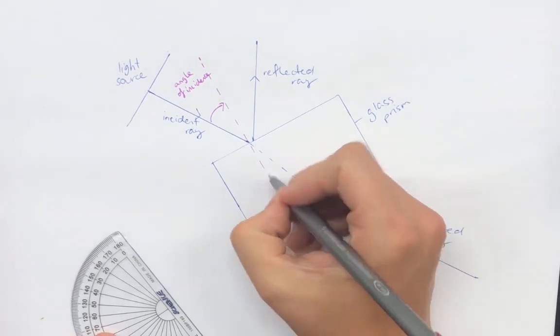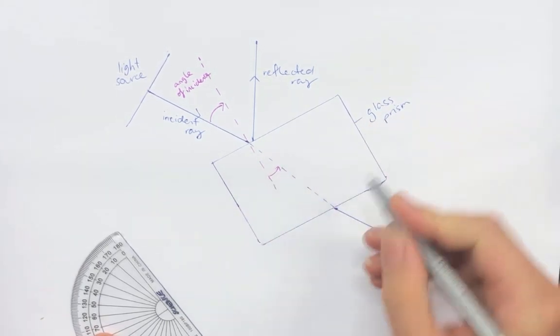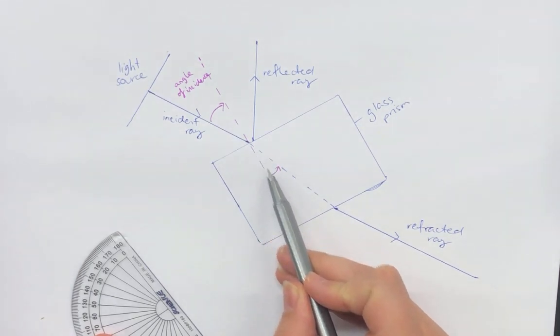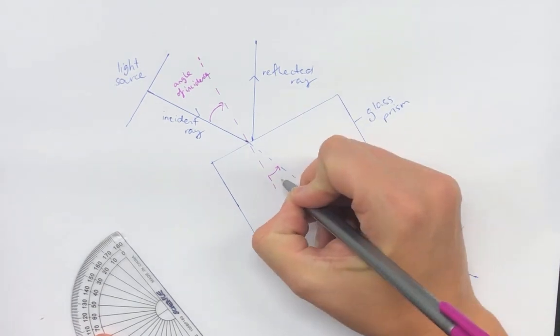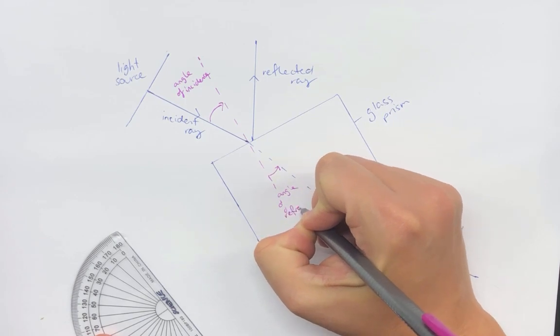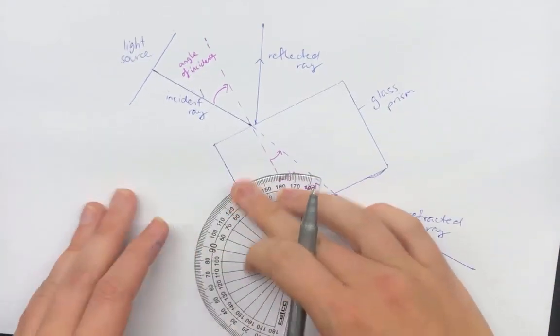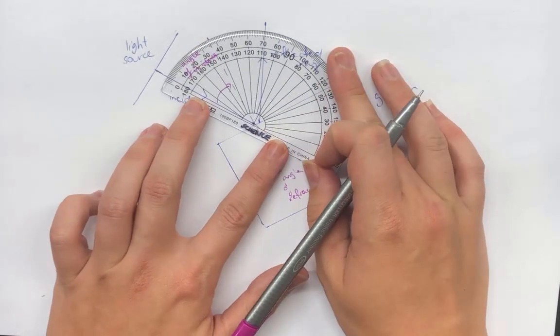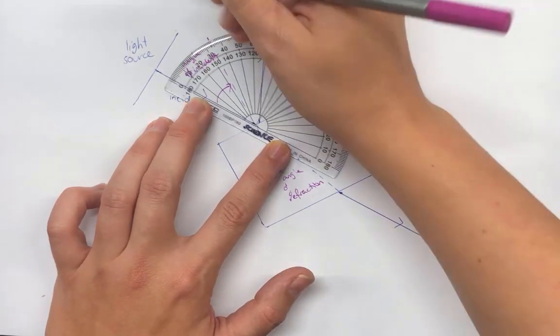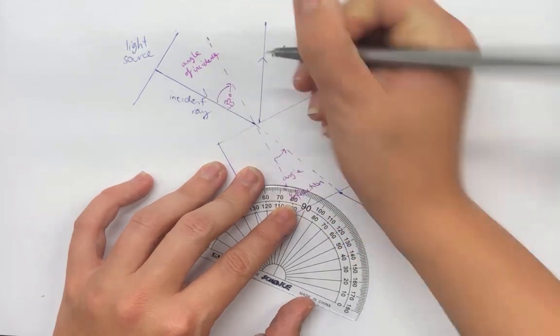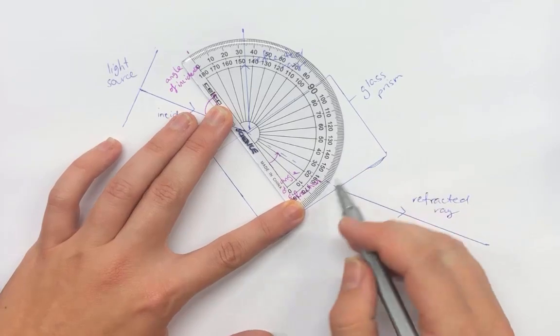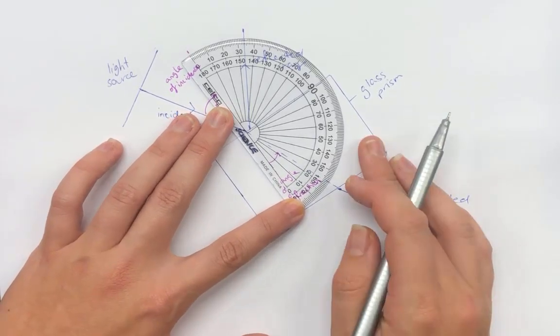Now the angle of refraction is this angle here. It's the angle that is made between the refracted ray and the normal. So in this case, let's measure it up. Here we have that the angle of incidence is 33 degrees. And the angle of refraction is 23 degrees.